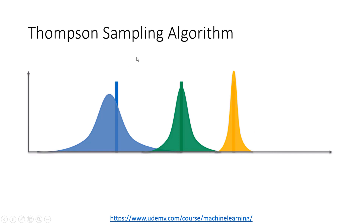So that's the Thompson sampling algorithm, and we are going to implement it. It's actually simpler than the UCB algorithm — or maybe I think it's simpler because I already know the UCB algorithm. It is probabilistic, not deterministic. We are going to talk about the differences between Thompson sampling and the UCB algorithm in the next video. Okay, so that's it for Thompson sampling — bye-bye.